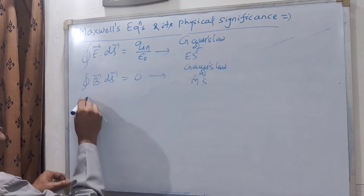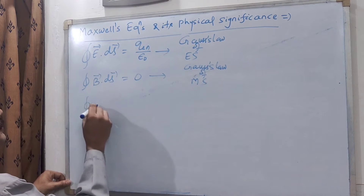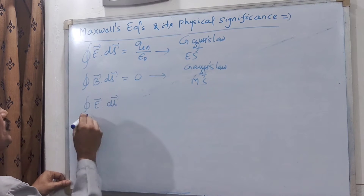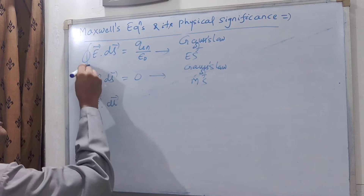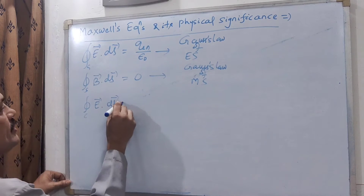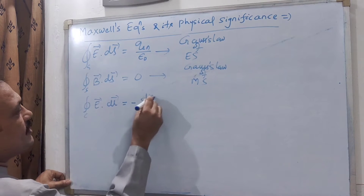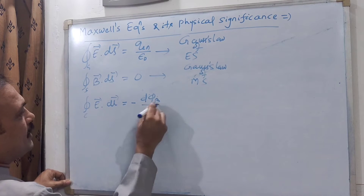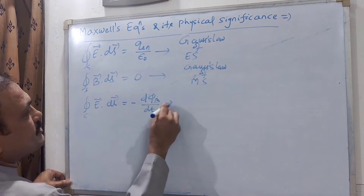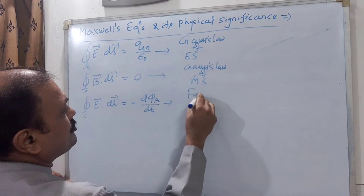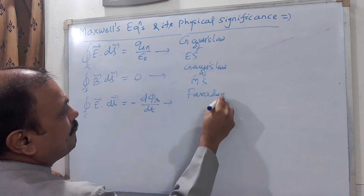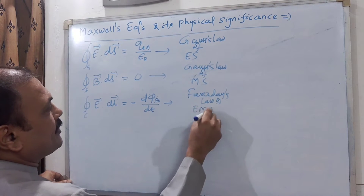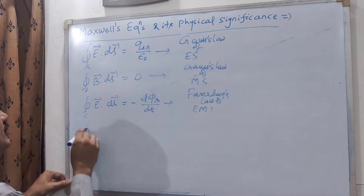The third equation is ∮E·dl = −dΦ_B/dt. This is Faraday's law of electromagnetic induction.